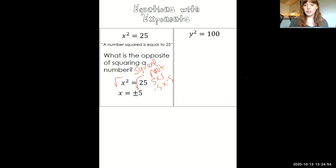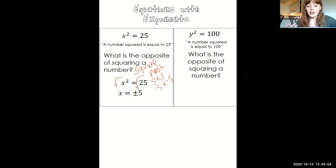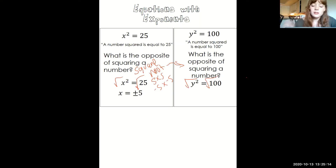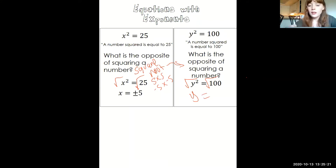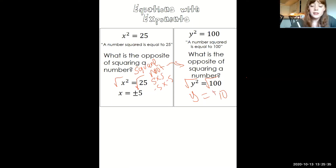Another example: y squared equals 100. In words, a number squared is equal to positive 100. We ask ourselves what's the opposite of squaring a number — taking the square root. So we take the square root of both sides. The square root of y squared is just y, and the number times itself that gives you 100 is 10. But it's also negative 10, because negative 10 times negative 10 is also positive 100. These always have two answers — a plus and a negative answer for square root problems.